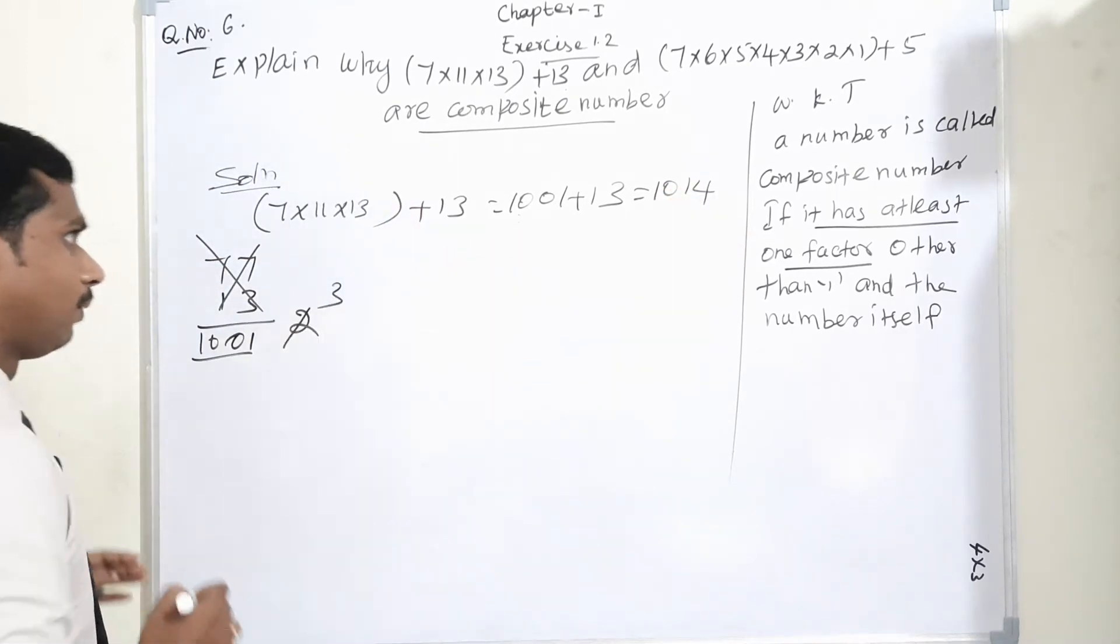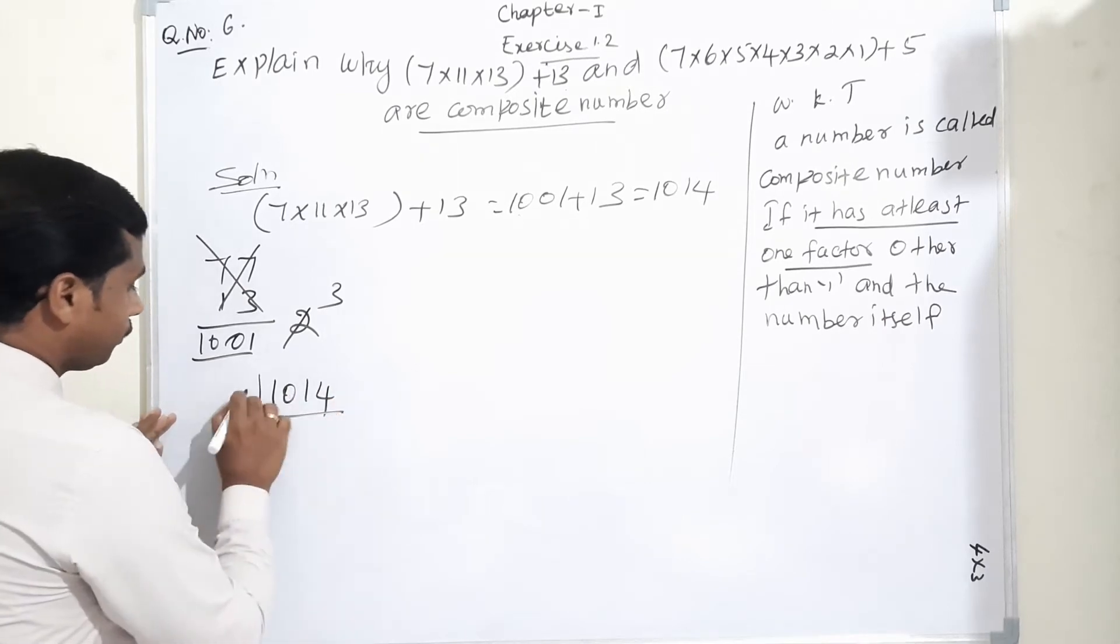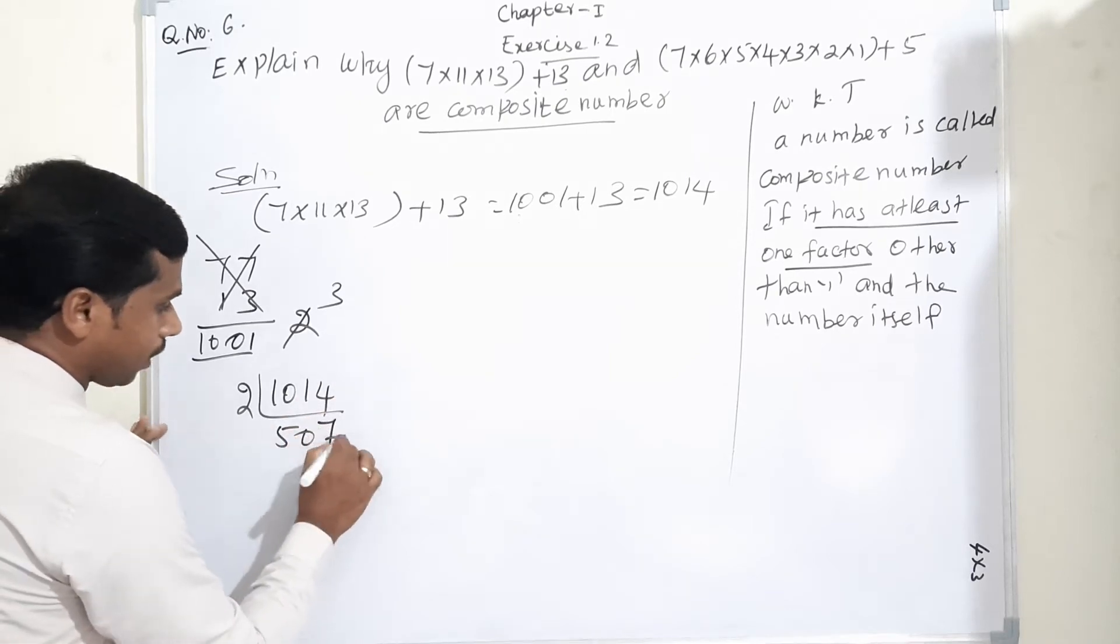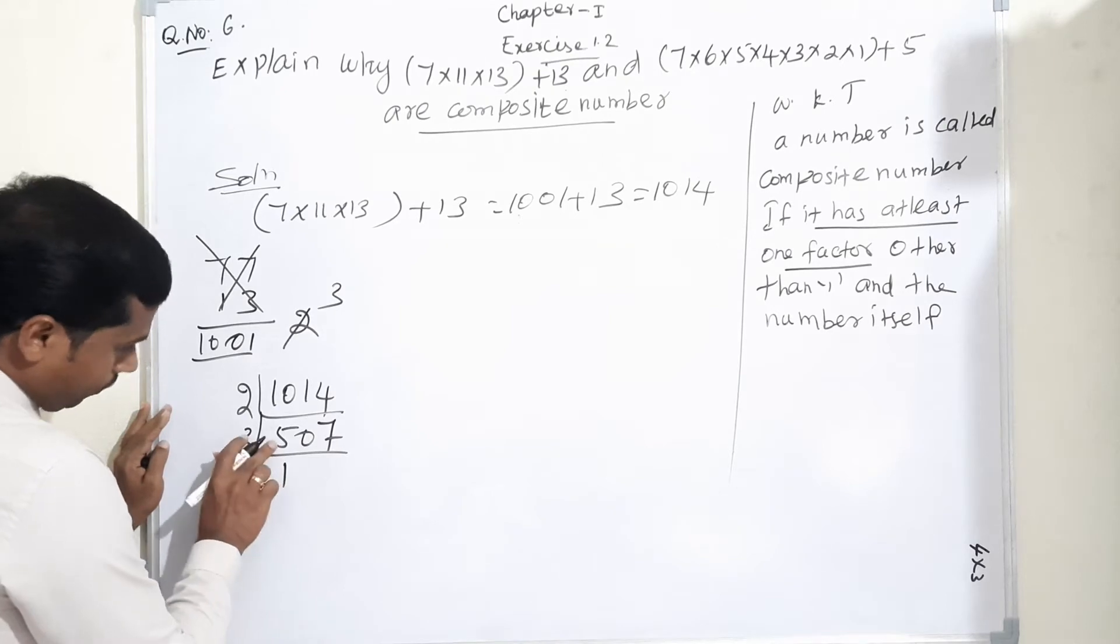So it will be equal to 1001 plus 13, which equals 1014. We take the prime factorization form of 1014. 2 times gives 507. Then 3 times third table, 3×6 is 18. Balance 20, then 9.